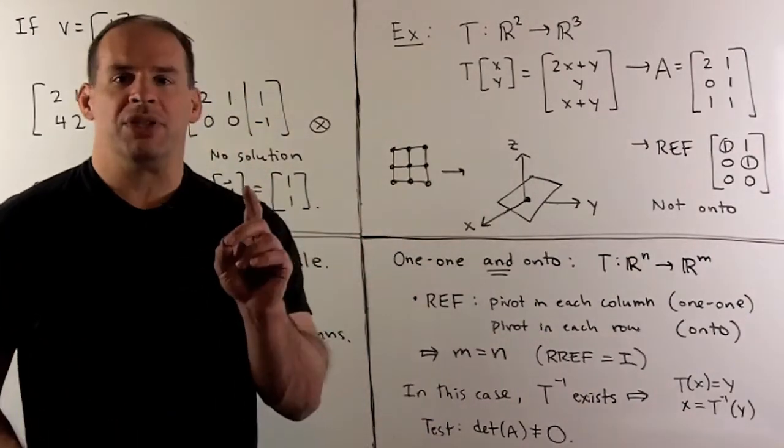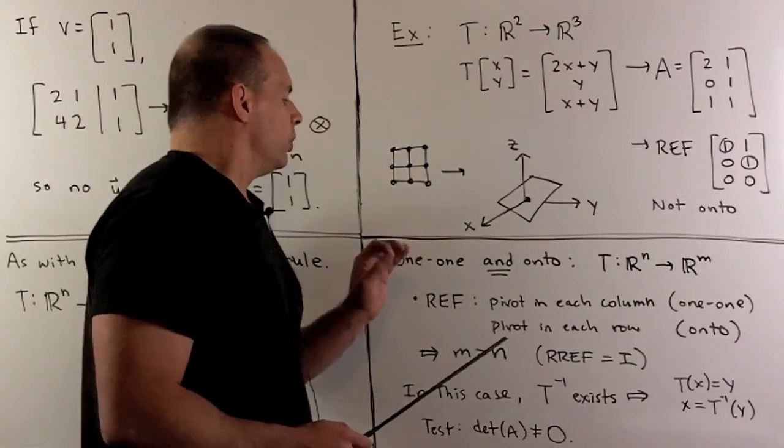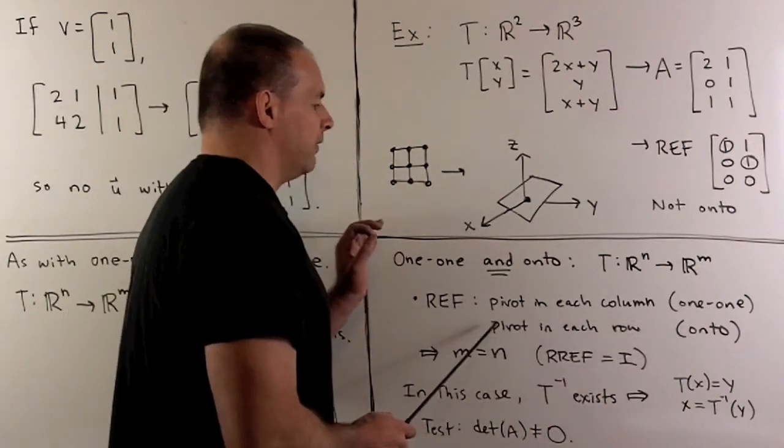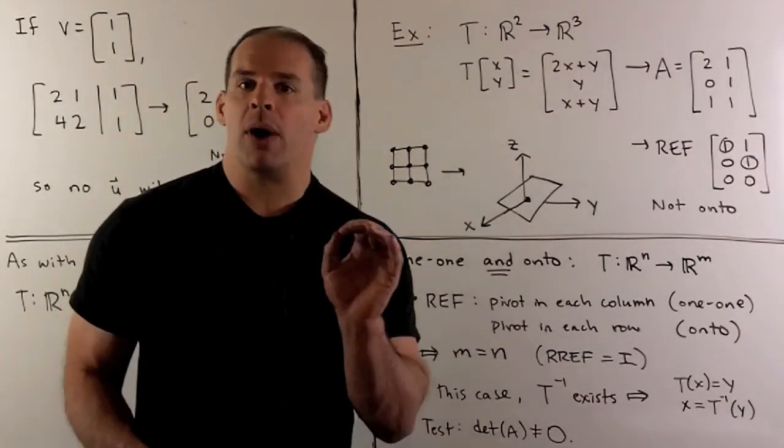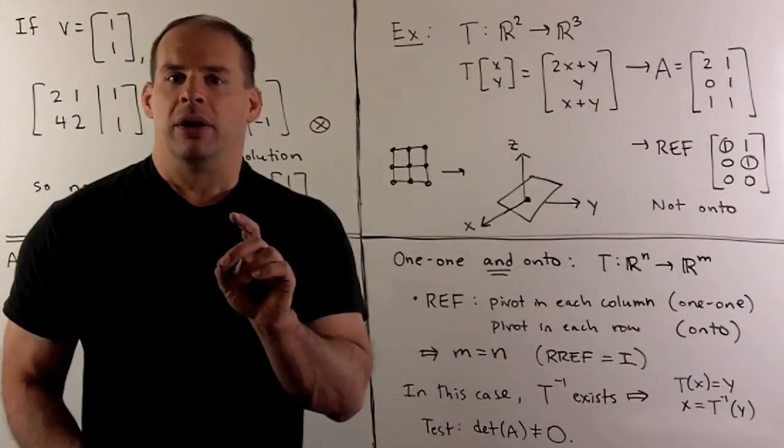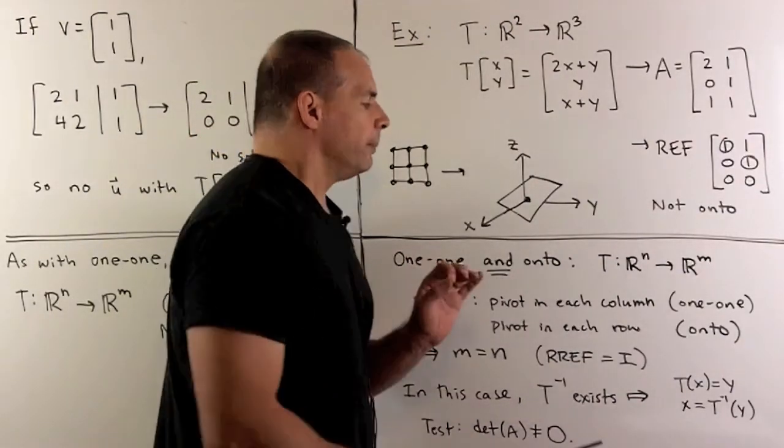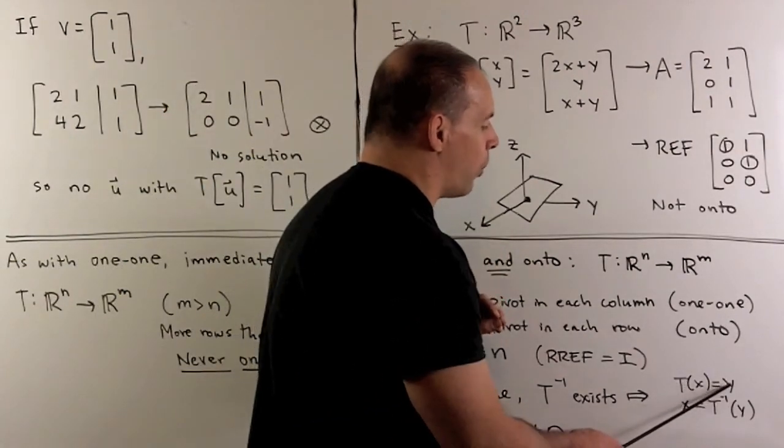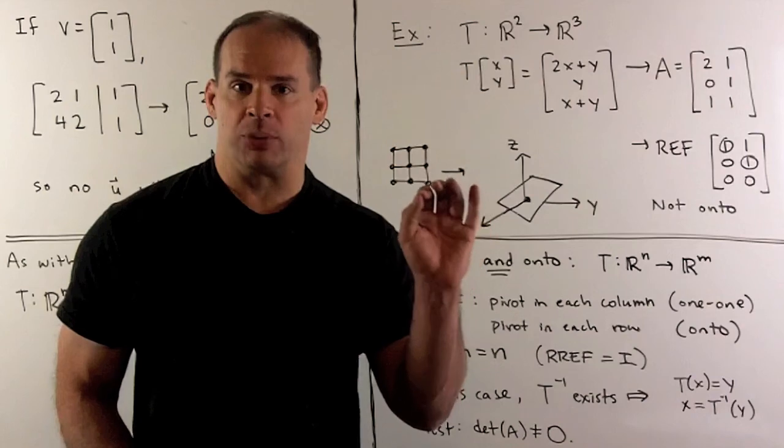Finally, what happens if our linear transformation is one-to-one and onto? If we form the A matrix, go to row echelon form, we have a pivot in each column from one-to-one, a pivot in each row from onto, so that means our M is equal to N, and the reduced row echelon form is the identity matrix. Now, this is exactly the condition we want for the existence of an inverse function for T. Recall, when we have an inverse function for T, that's defined by saying if T of X is equal to Y, then T inverse of Y is equal to X. This is going to occupy some time in your linear algebra class.